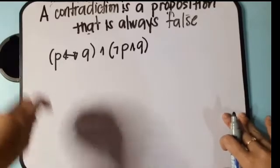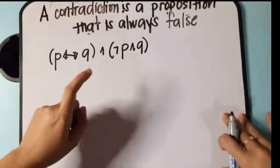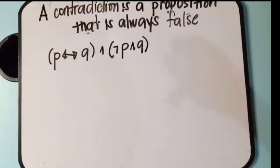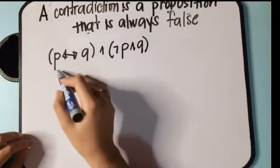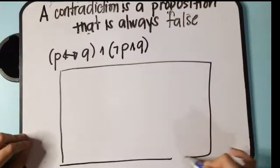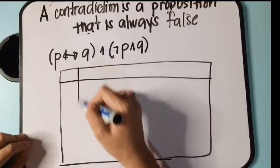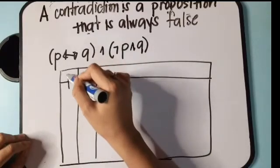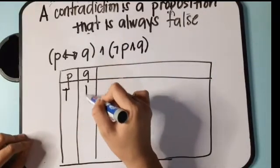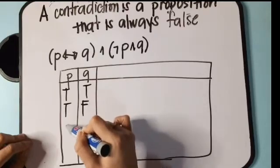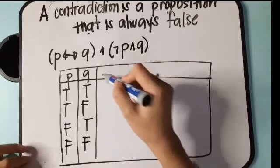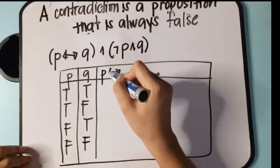Let's have another example: P if and only if Q, and not P and Q. We have two propositions, so we have four rows. P and Q can be: true-true, true-false, false-true, or false-false. First, let's compute the biconditional of P and Q.